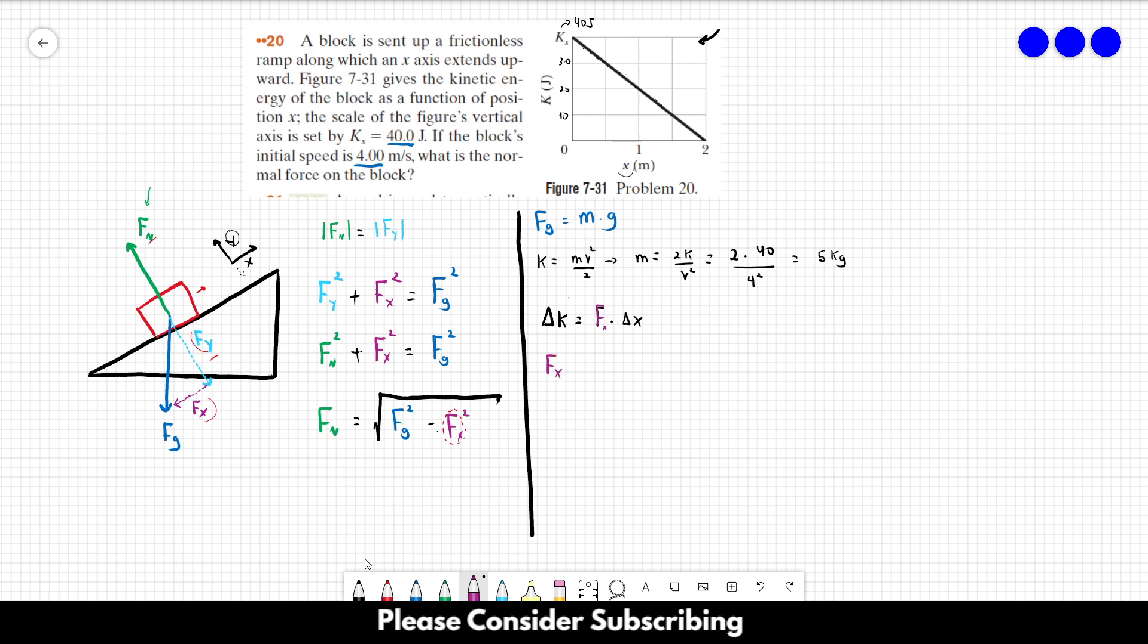So Fx is equal to delta K over delta X. So let's just analyze the movement from this point to this point. And we can see that the change in the kinetic energy is equal to minus 40 joules. And delta X is equal to 2 meters. So the force is equal to minus 20 newtons. So that's the value of Fx. And now we can just replace the letters by the numbers in this equation over here.